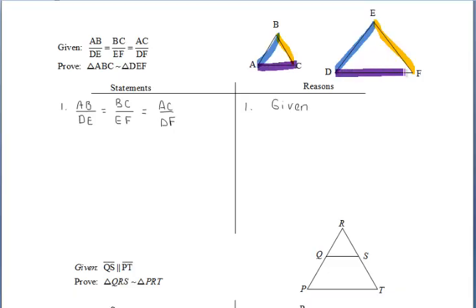Just like side-angle-side similarity, we typically do not use side-side-side similarity in a two-column proof, but I just wanted to show you what it looks like here.